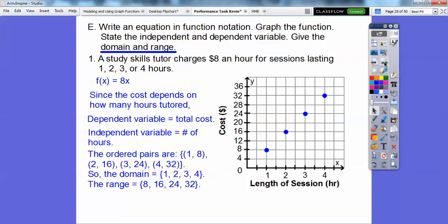Okay, all right, and then so the ordered pairs are 1, 8, 2, 16, 3, 24. Look, this is 1 times 8 is 8. 2 times 8 is 16. 3 times 8 is 24. 8 times how many hours there are right there. So the domain is all the 1, 2, 3, 4. And the range is all the 8, 16, 24, and 32 right there.